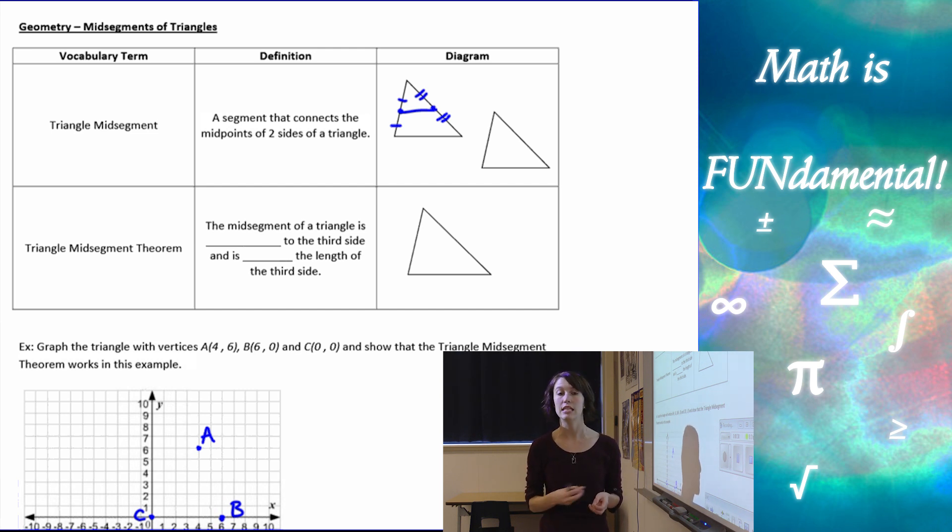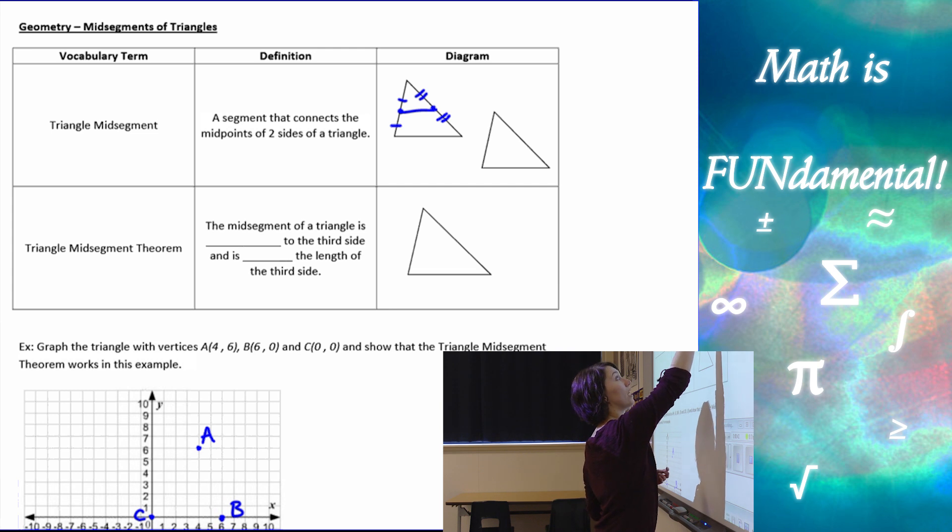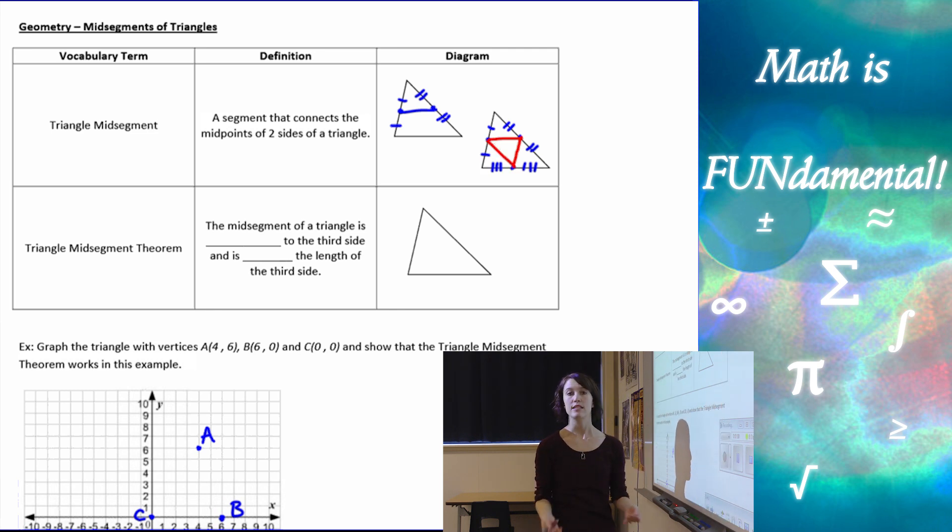Now there are multiple mid-segments inside of a triangle, there's actually three of them. So in this diagram I'm going to show you what happens, or what it looks like, if we connect all of the mid-points of our triangles. So if I do that, I'll do it in a different color, here's the one mid-segment, here's another mid-segment, and then here's another mid-segment. And it actually creates what's called the mid-segment triangle of our triangle. So that is what a mid-segment is.